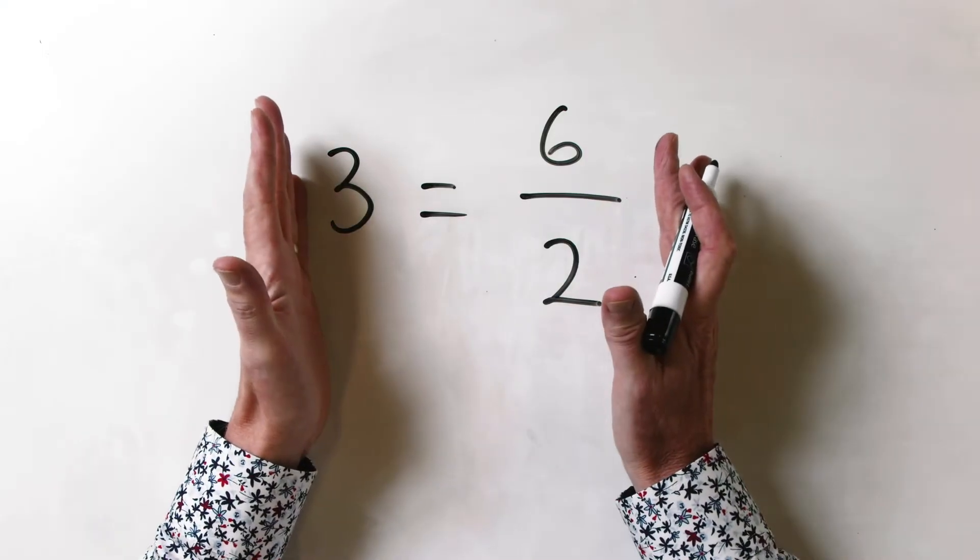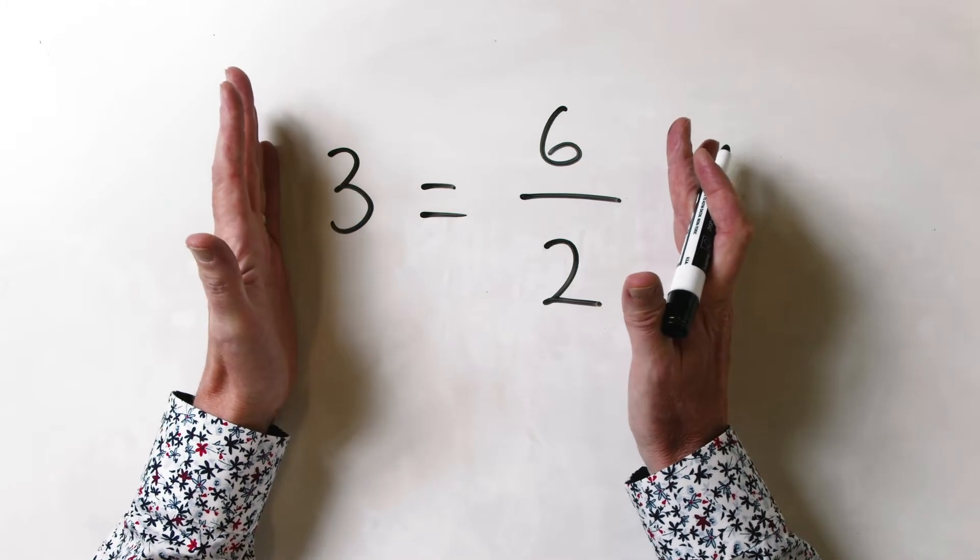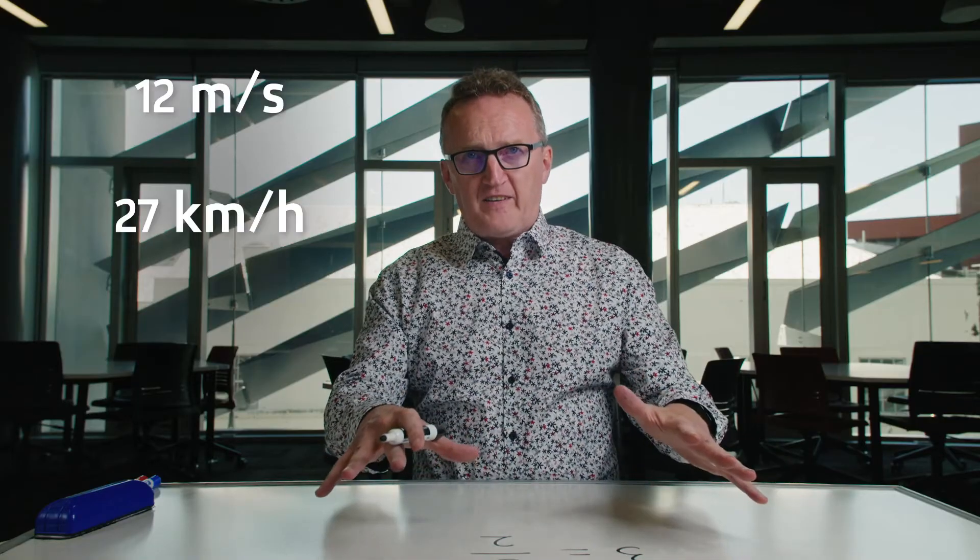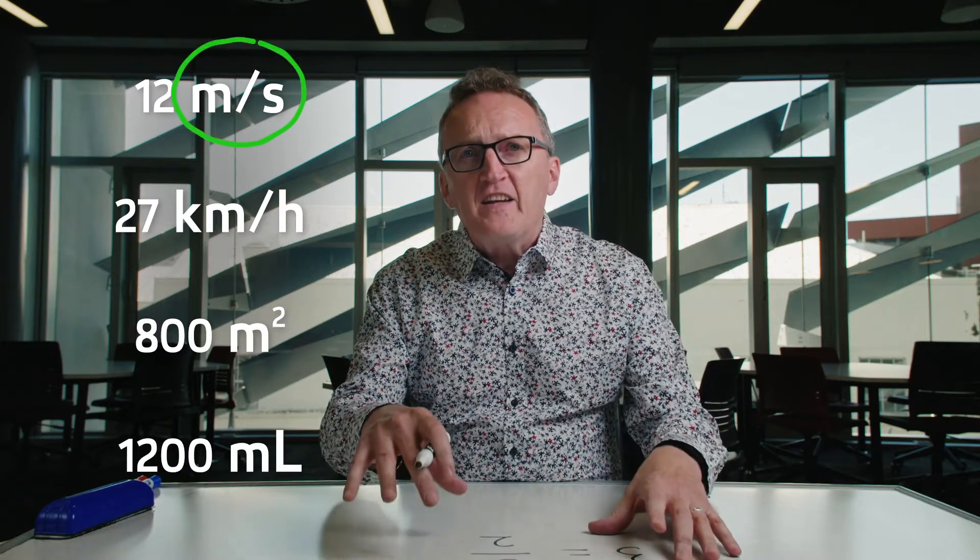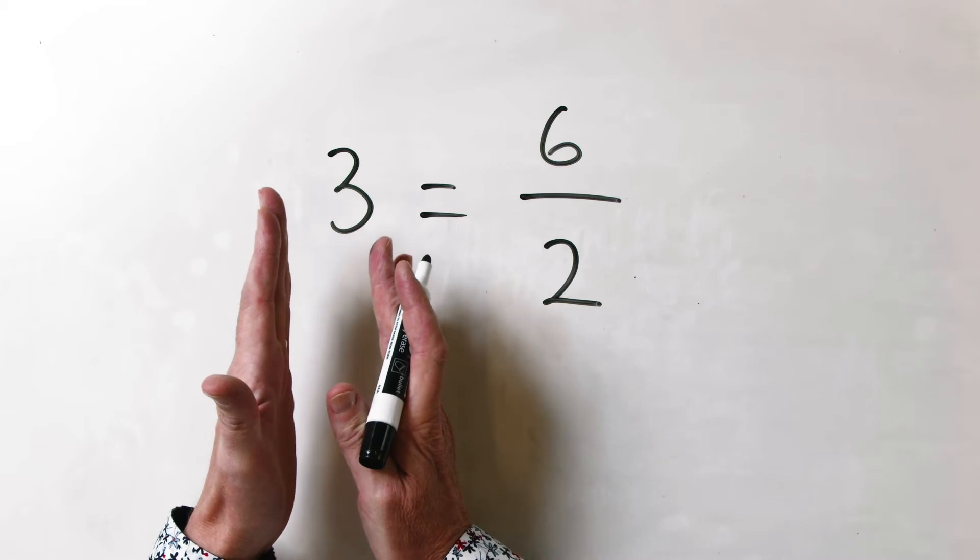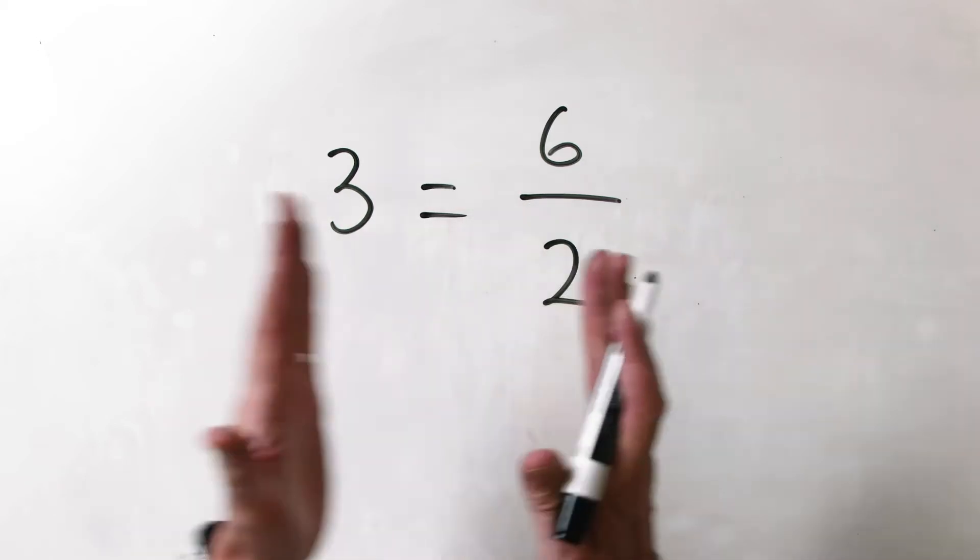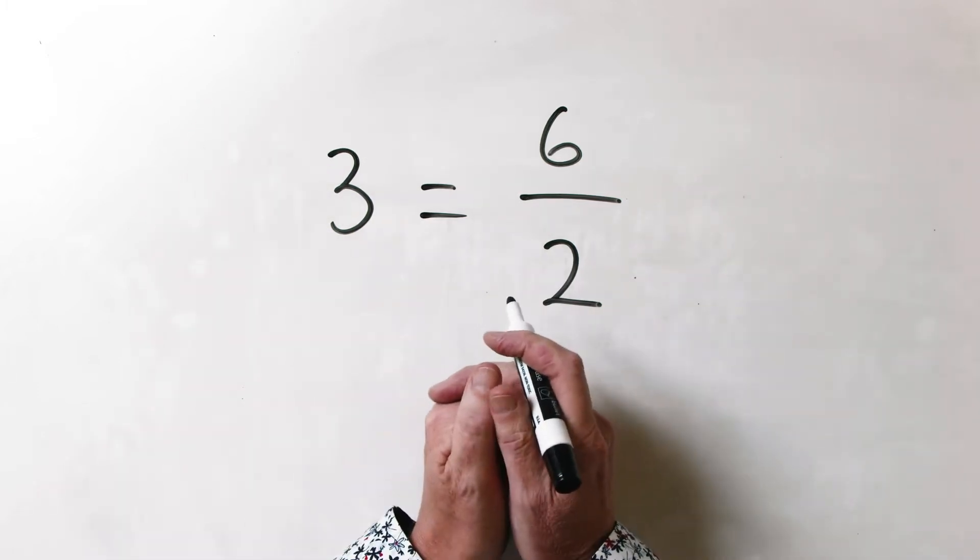Those are equations in terms of numbers. We're going to be talking in chemistry a lot about equations that involve numbers, but also equations that involve units. Because whenever we make a measurement in science, that number has got an associated unit. Not only do the numbers on both sides of an equation have to be the same, the units on both sides of an equation have to be the same as well.